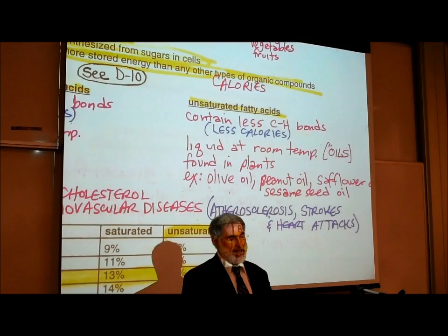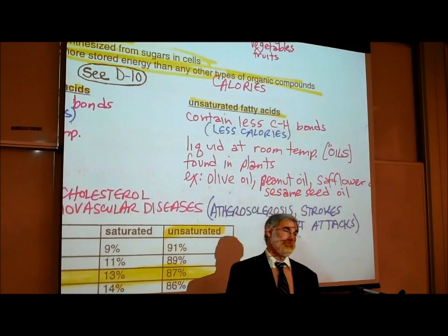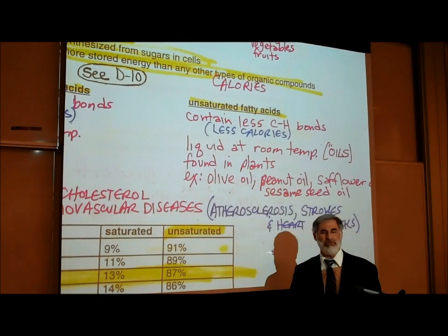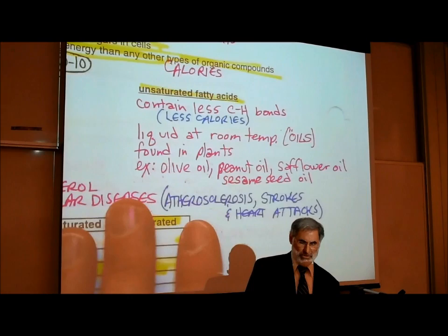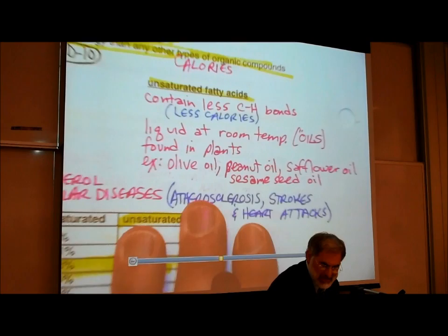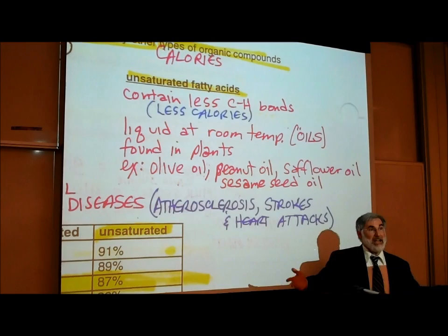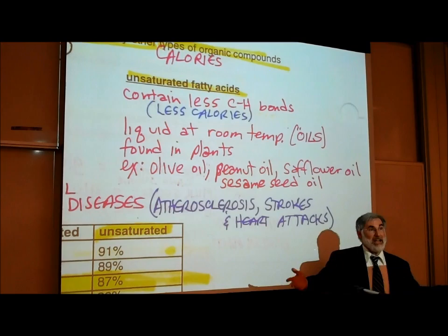Unsaturated fats are generally liquid at room temperature — the term we give to a liquid fat is an oil. We call liquid fats oils. These oils, or liquid fats, are primarily found in plants. Examples of fats or oils that are primarily unsaturated and from plants include olive oil, peanut oil, safflower oil, and sesame seed oil. These are all fats from plants and are largely unsaturated fats.